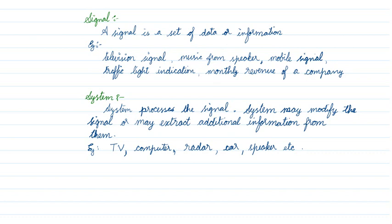A traffic light — red or green — conveys information, so it's a signal. The monthly revenue of a company is a signal: if it's high and positive, the company is doing well; if it's low or negative, it's incurring a loss. Even the temperature measured by a doctor to check for fever is a signal. This subject deals with how to process such signals.